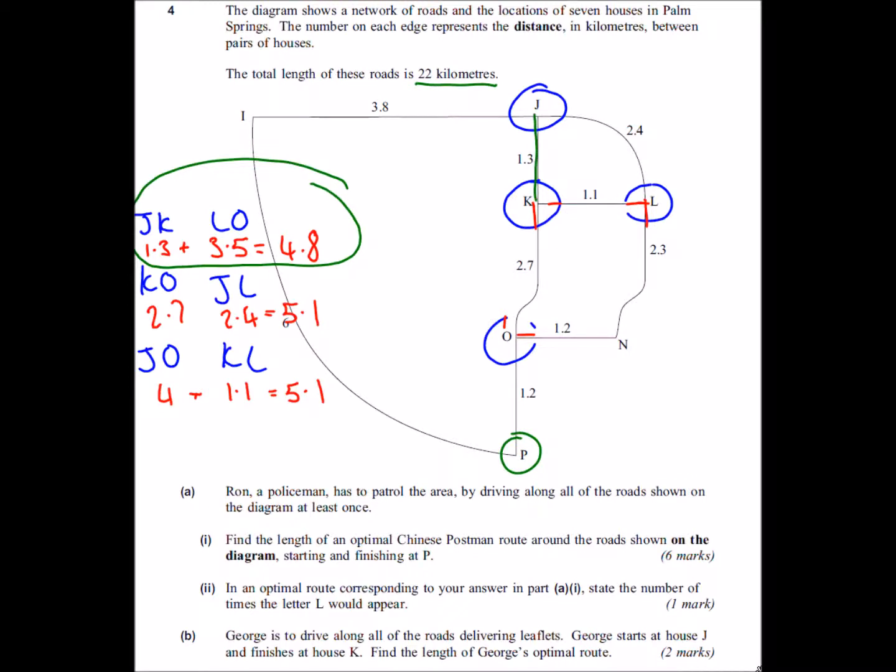So we want to go along the road J to K twice and we want to go along how we did L to O, which we did by coming down and across. Notice that it asks us for the length of the optimum Chinese Postman route, it doesn't actually ask for a route, so we know that we're going to have to walk along all the roads once, but we're going to walk along J to K and L to O twice.